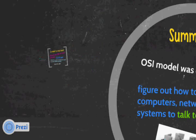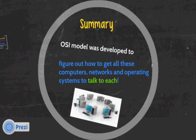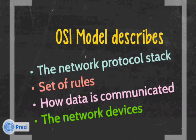In summary, the OSI model was developed to figure out how to get all these computers, networks, and operating systems to talk to each other. The OSI model describes the network protocol stack, which is a set of rules used to describe how data is communicated over a network. What's also interesting is that it describes network devices. The OSI model consists of seven layers.